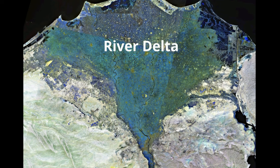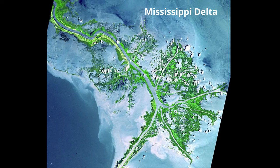It's named a river delta because of its triangle shape, which resembles the Greek letter delta. However, not all deltas are triangle shaped. A bird foot delta has few, widely spaced distributaries, making it look like a bird's foot. The Mississippi River is an example.